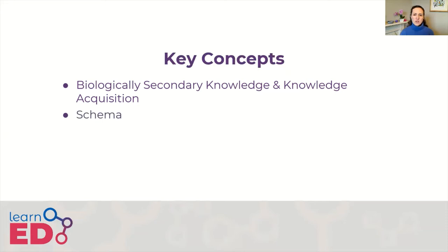The best way to think about schemas is perhaps as adaptive blueprints. We have a schema of a concept — and I'm going to use the restaurant example like most psychologists. We have a schema of a restaurant that is built up over many visits to restaurants. Each time I visit a restaurant, I add a little bit more information about how restaurants might operate to my schema, broadening and deepening my understanding.